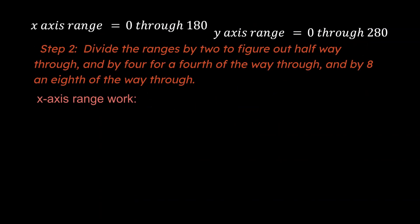Our second step is to divide the ranges by two to figure out halfway through. And to divide them by four for a fourth of the way through. By eight for an eighth of the way through. So let me show you what I'm talking about. We're talking about two different things here. We're talking about our ranges for the X axis and the Y axis.